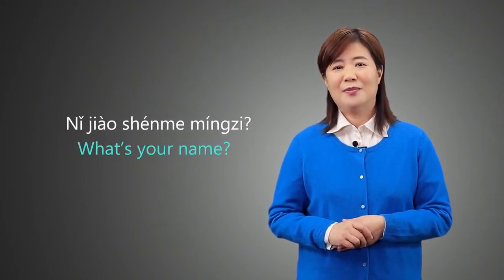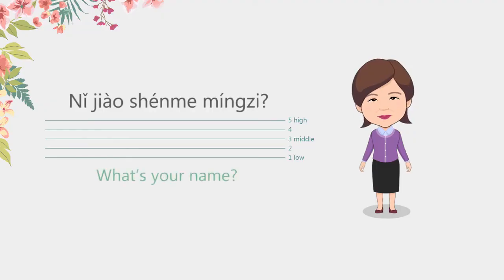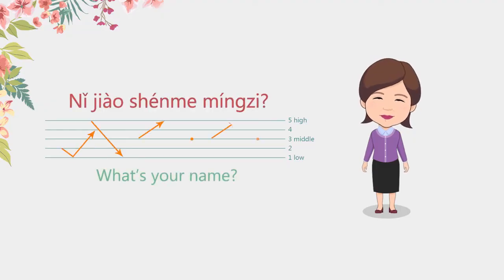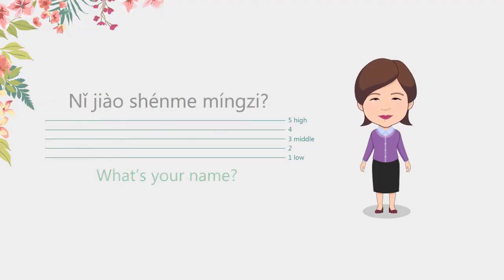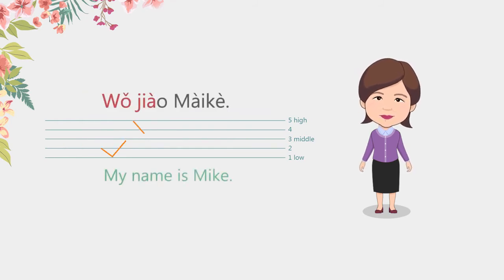你叫什麼名字? The answer is 我叫... 麥克 is the transliteration of the name Mike. Now read with me: 你叫什麼名字? 我叫麥克。